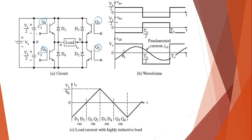The working is the same as that of the half bridge inverter. The only difference is that during mode 1, in the previous case only one switch was operating. Here you have two switches — in mode 1, Q1 and Q2 are turned on.